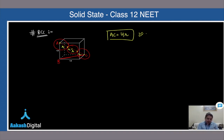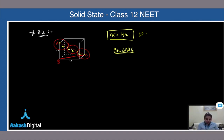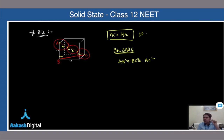In triangle ABC, angle ABC is 90 degrees, so AB² + BC² = AC². We need to find BC. Since BD = a and CD = a (where D is the midpoint), BC equals √2·a, as calculated earlier for the face diagonal.